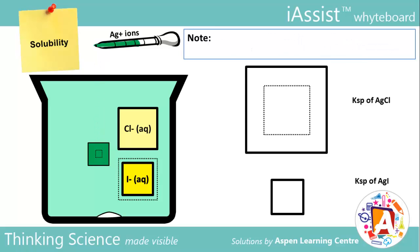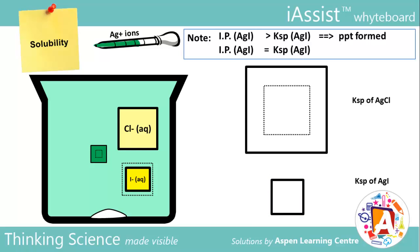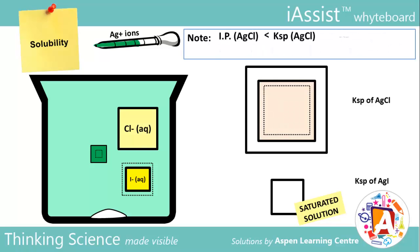We now simulate the addition of more Ag⁺ to the same solution. Once again, IP of AgI increases due to the higher Ag⁺ concentration. The IP of AgI exceeds the Ksp of AgI once more, so precipitation occurs as discussed previously. Precipitation will occur until AgI's IP equals its Ksp. Note that a precipitate is always in equilibrium with its saturated solution. As concentration of I⁻ falls with the formation of more AgI precipitate, concentration of Ag⁺ in the beaker will slowly creep upwards, resulting in a higher IP for AgCl. However, IP of AgCl is still lower than its Ksp, so no precipitation of AgCl occurs.